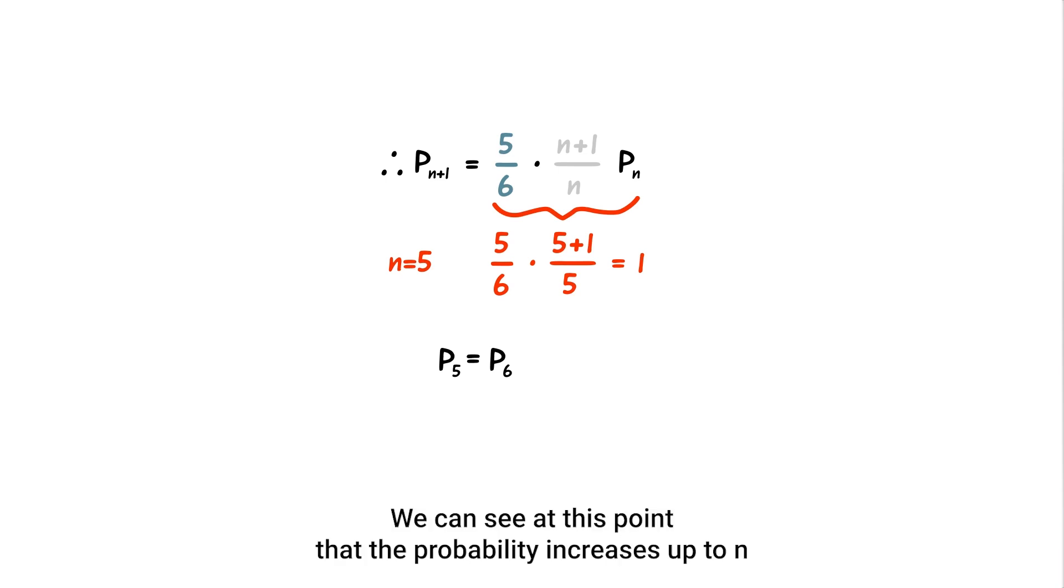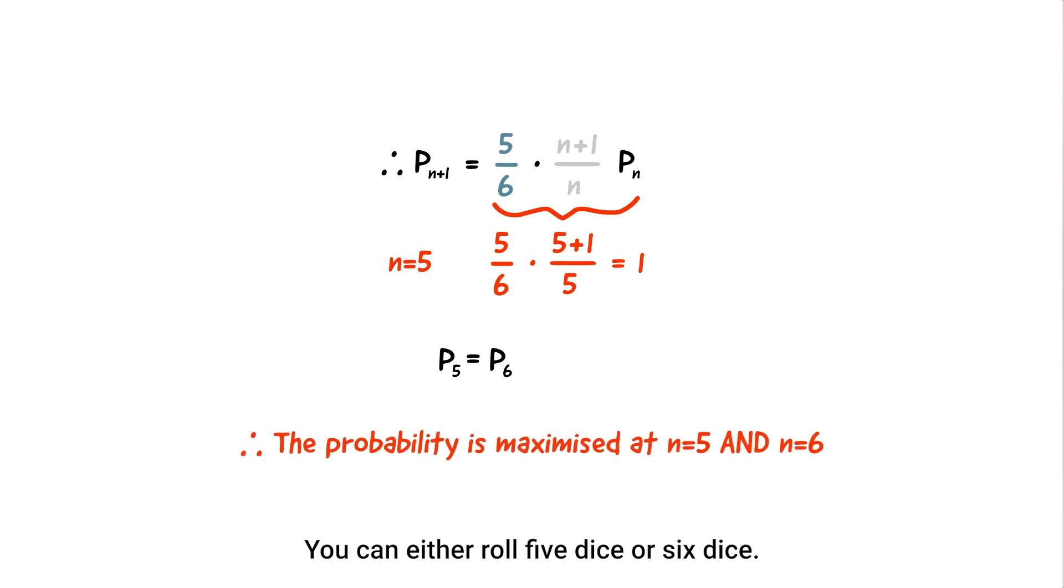We can see at this point that the probability increases up to n equals five, stays the same for n equals five and n equals six, and then decreases towards zero as n gets larger. Therefore, we have the answer. You can either roll five dice or six dice.